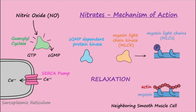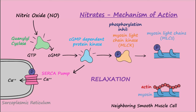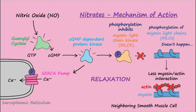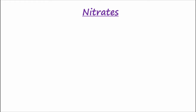Cyclic GMP then activates a cyclic GMP-dependent protein kinase, which phosphorylates myosin light chain kinase (MLCK) and also phosphorylates the SERCA pump. Phosphorylation inhibits MLCK, so that it phosphorylates the myosin light chain less. Less phosphorylation of light chains on myosin results in less myosin-actin interaction and therefore smooth muscle relaxation. The SERCA pump is activated by cyclic GMP-dependent protein kinase, which acts to decrease calcium in the cytosol, also leading to relaxation.